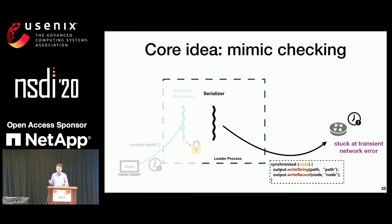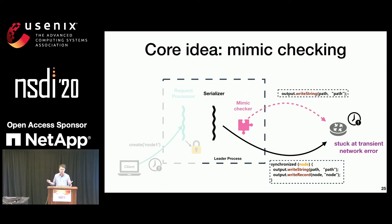The way we build tailored checkers is mimic checking. The mimic checker performs a similar operation as the checker target. It has good accuracy because it shares the same fate with the main execution, and it can pinpoint the faulty operation. For the previous ZooKeeper example, a mimic checker would do a test snapshot operation, similar to what the serializer did. As a result, it also gets stuck, and thus the watchdog can observe the liveness issue.